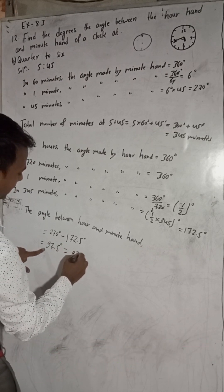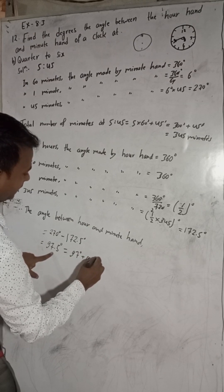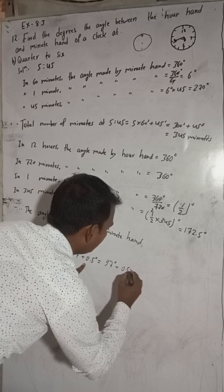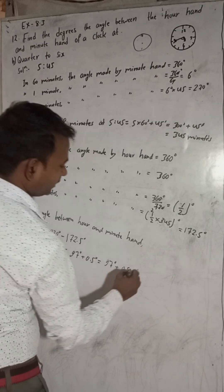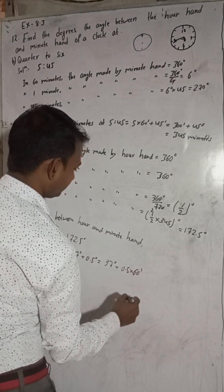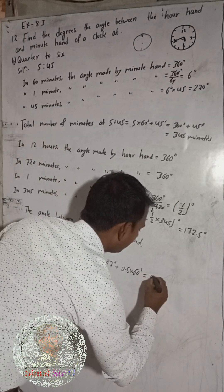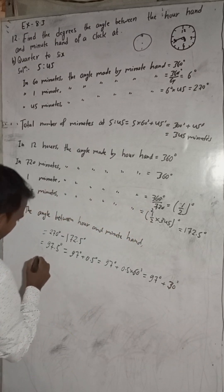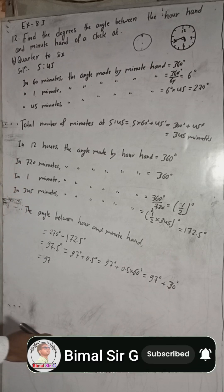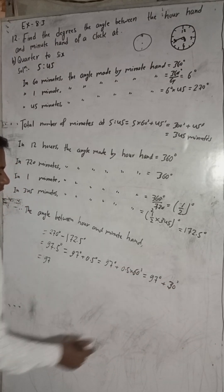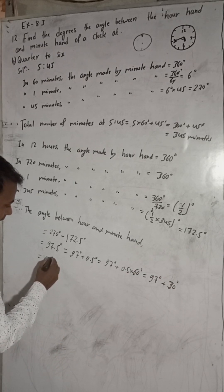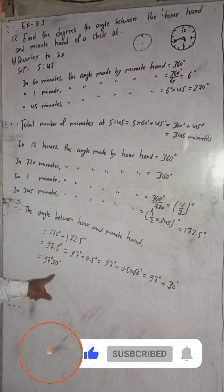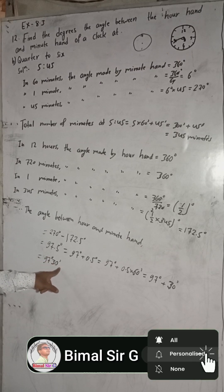Now 97.5 degrees is equal to 97 degrees plus 0.5 degrees. We convert 0.5 degrees to minutes by multiplying by 60, because multiplying by 60 converts degrees to minutes. So 0.5 times 60 equals 30 minutes. Therefore 97.5 degrees equals 97 degrees and 30 minutes. This is the format to write it — do not add 97 plus 30, since one is degrees and the other is minutes. The required answer is 97 degrees 30 minutes.